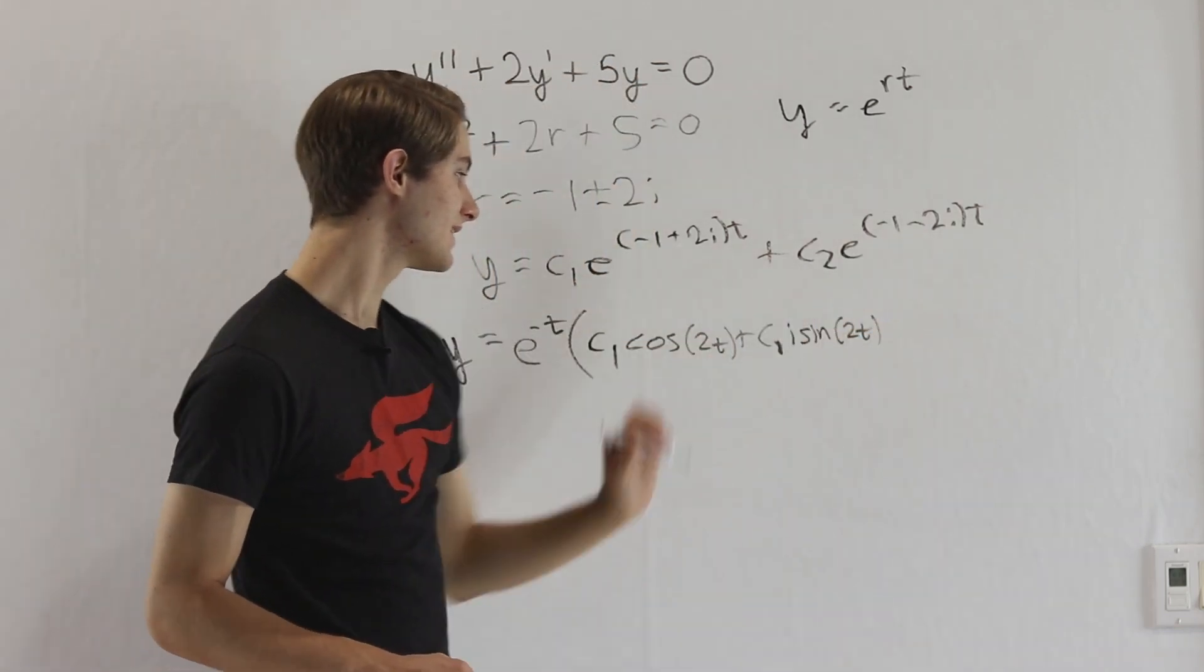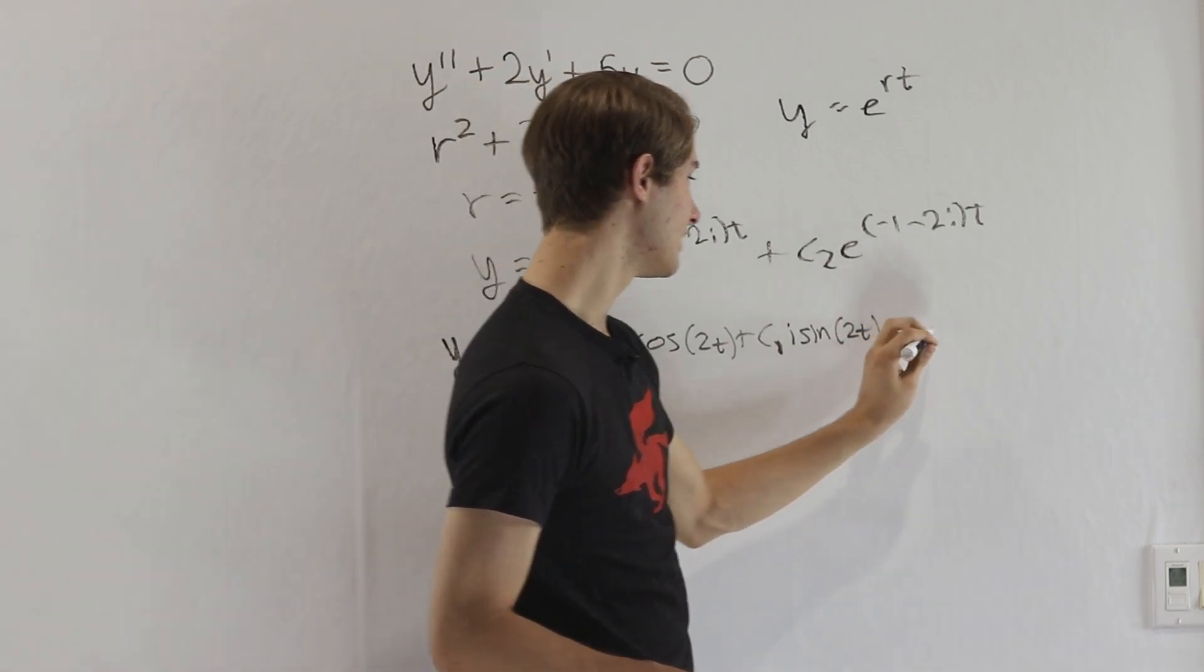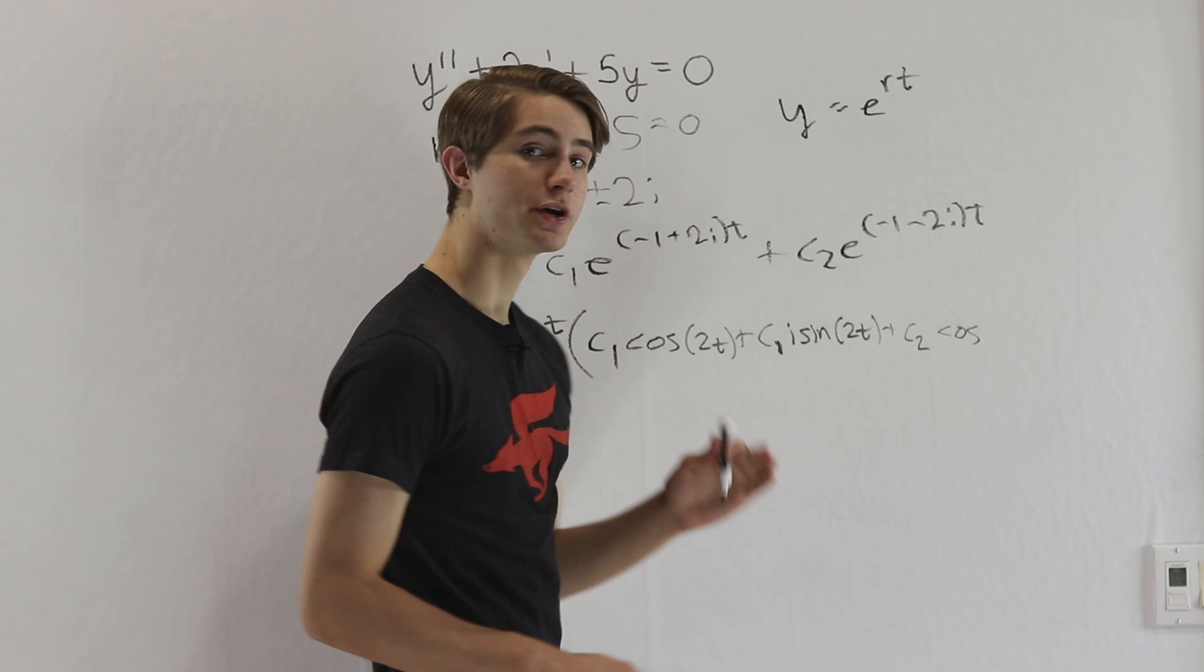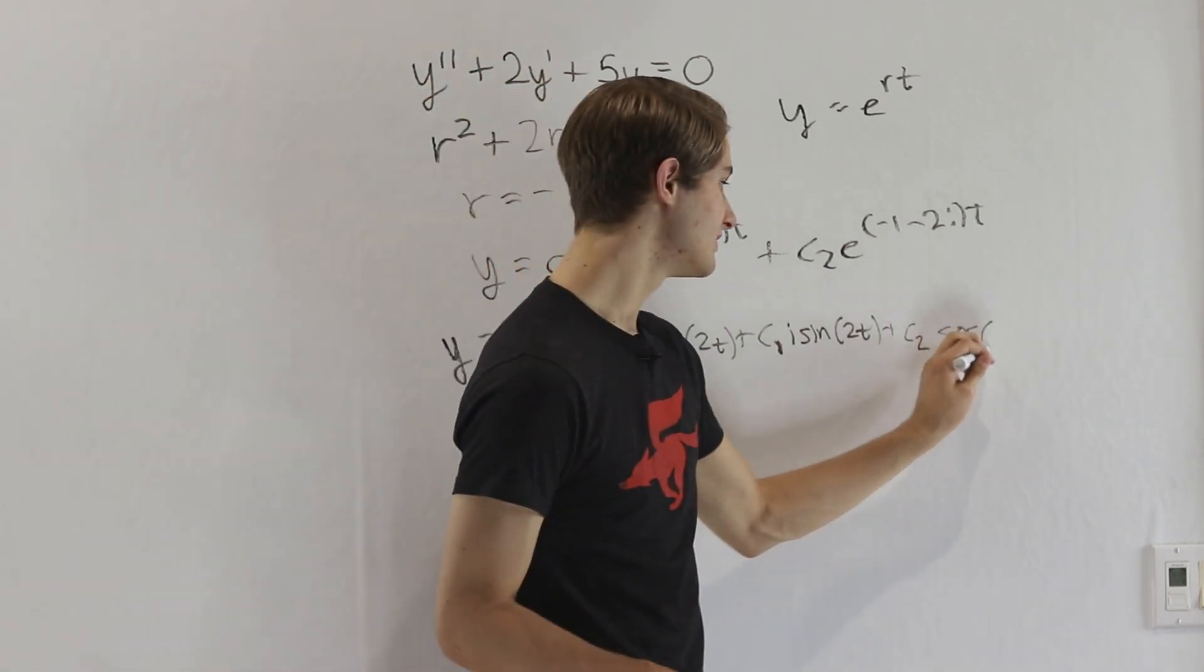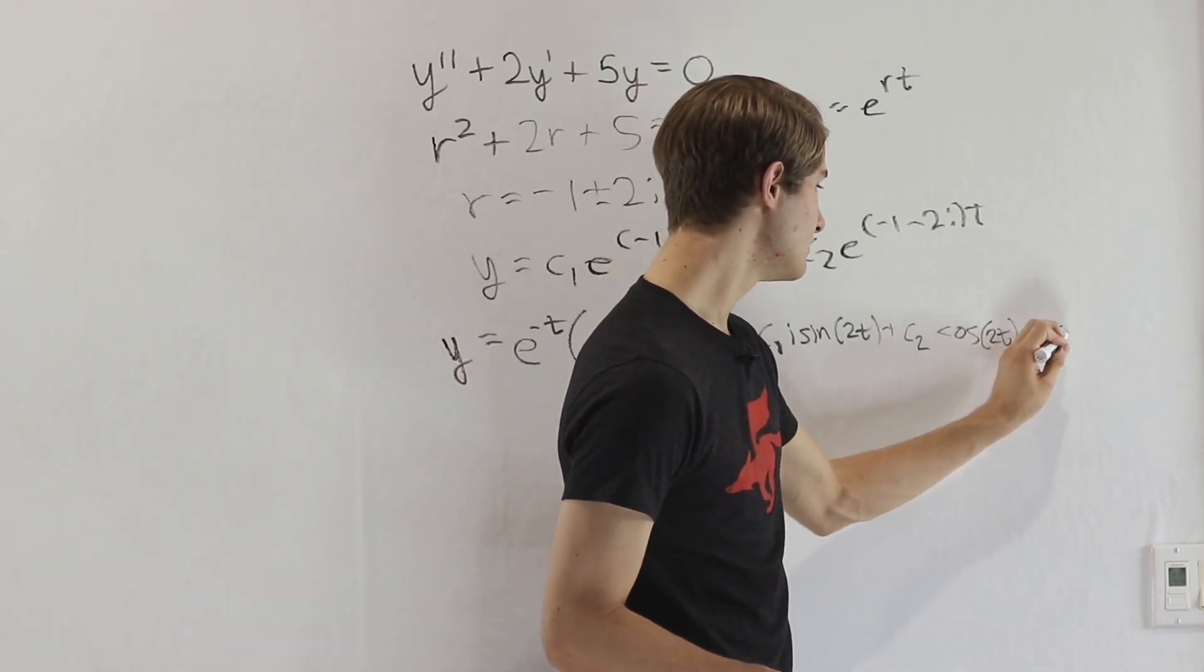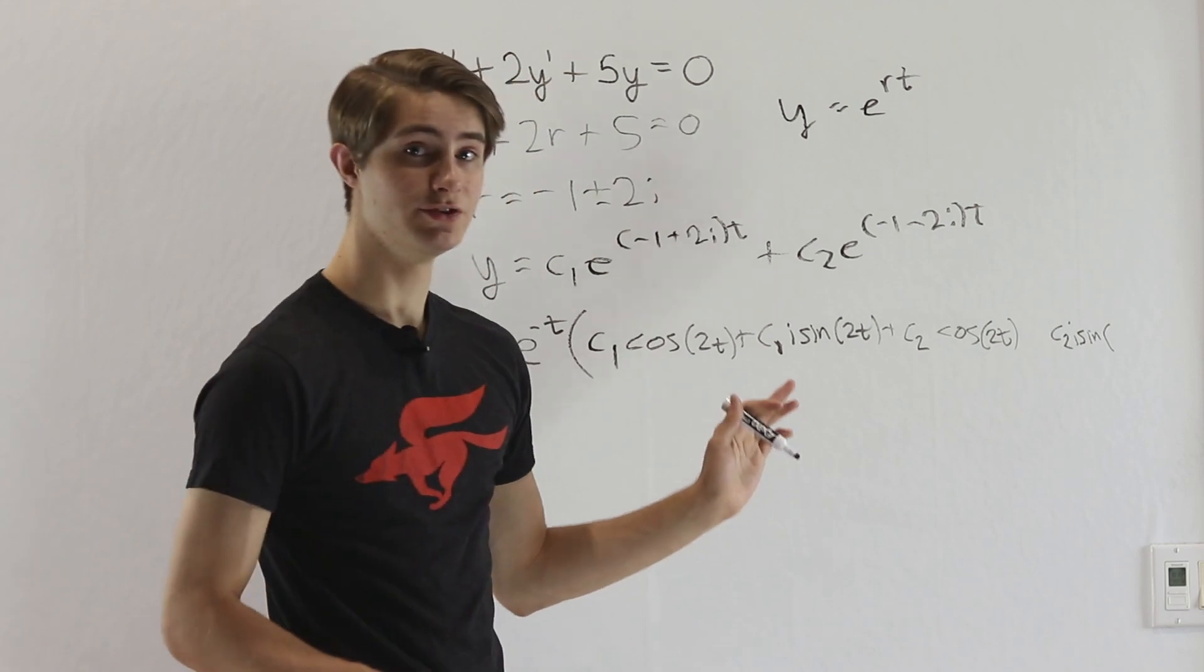Now if we want to look at this second one right here, we're going to again get c2 and then we'll have cosine of negative 2t this time, but cosine of negative 2t is the same as cosine of 2t, so we don't have to worry about that. Then we get c2i sine of negative 2t.